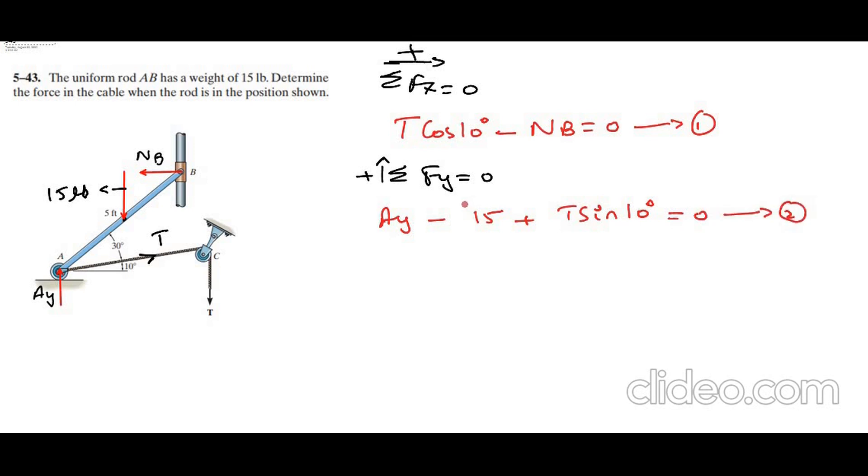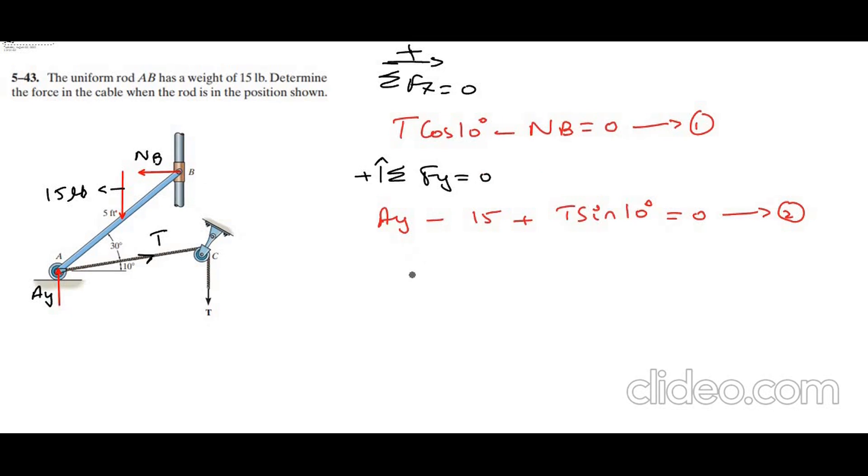Now we have involved three unknowns here, so we need one more equation. So our third equation is sum of the moments about point A equals to 0. I am considering clockwise moment as positive. The reaction Ay will not produce any moment about point A because it is passing through it, so there is no moment arm. The 15 pound weight is trying to rotate in clockwise direction, so it is taken as positive.